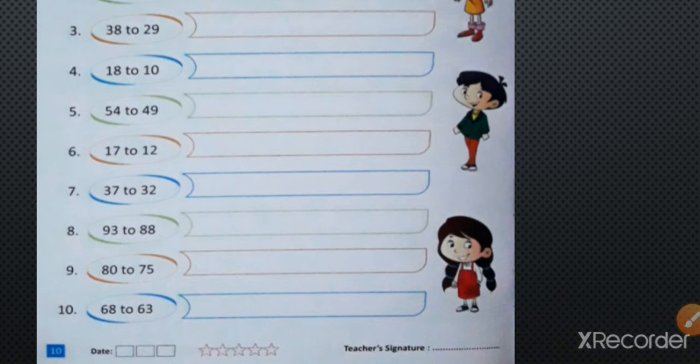Number 5, start 54 to 49. First write 54, then 53 to 51, 50, 49.